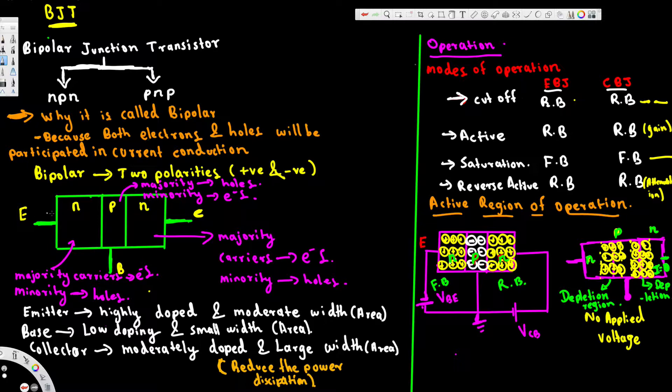Here we have an NPN transistor. E is the emitter. The emitter is highly doped and has moderate width.